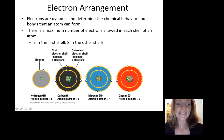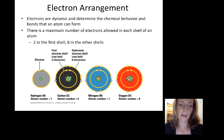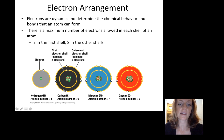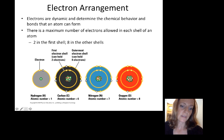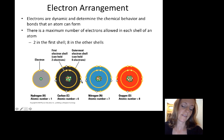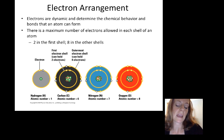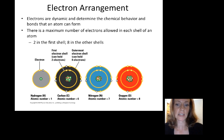Carbon has six electrons — two in the first shell and four in the next shell, for a total of six electrons to balance out the six protons in the core. That means carbon has four empty spaces in its outer shell with which to make bonds to other atoms. We could do the same analysis for nitrogen and oxygen.